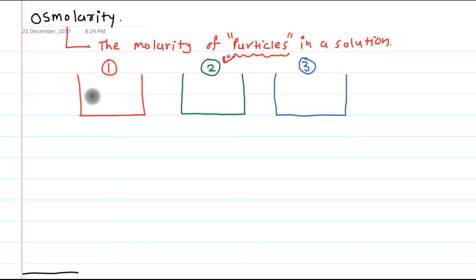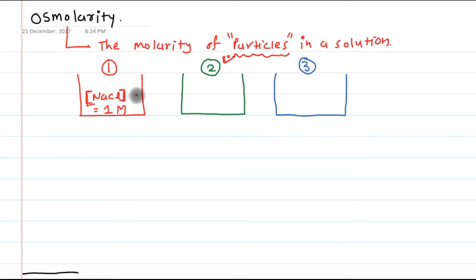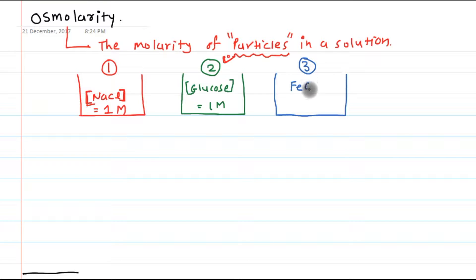In beaker 1, there is a sodium chloride solution and the concentration of the sodium chloride solution is 1 molar, that means 1 mole per liter. As this is a molar concentration, I am going to show it by square brackets. In beaker 2, we have glucose solution, and the concentration of glucose is also 1 molar. In beaker 3, we have ferric chloride solution, that is FeCl3, and the concentration of ferric chloride is also 1 molar.